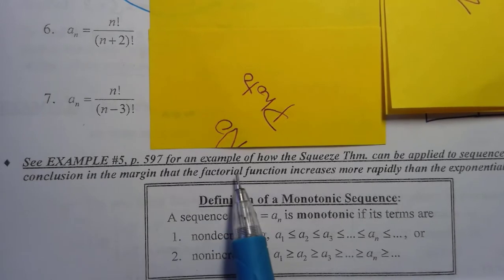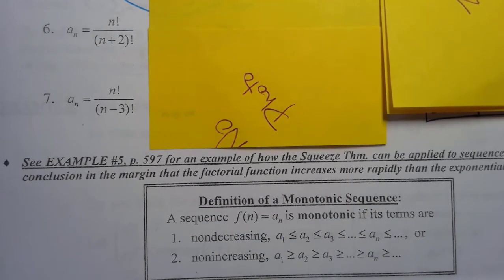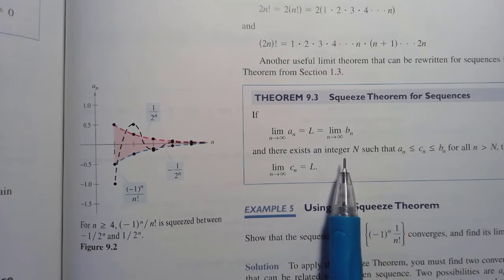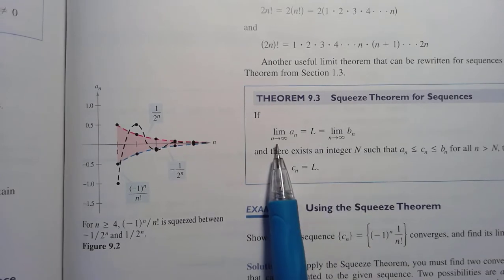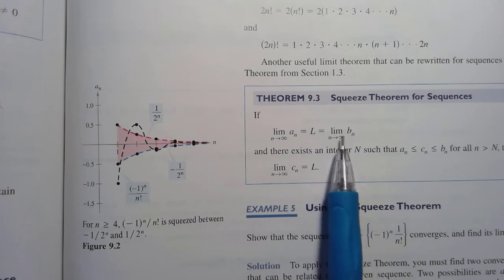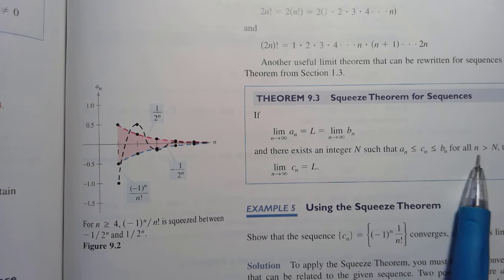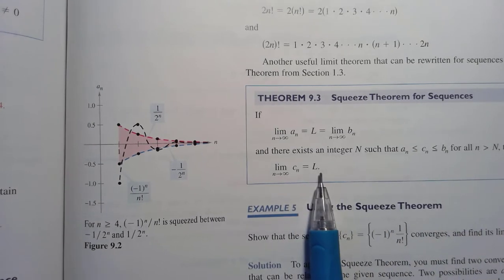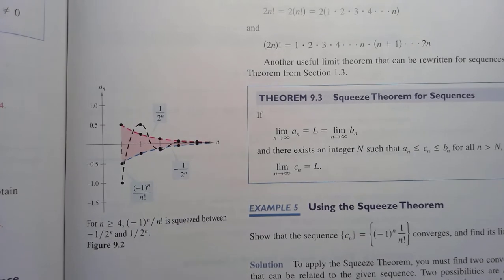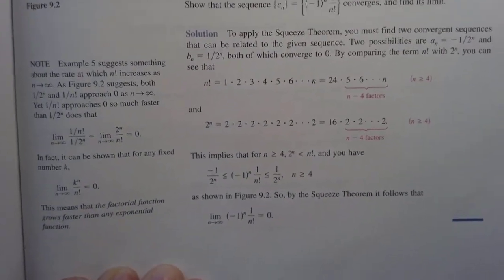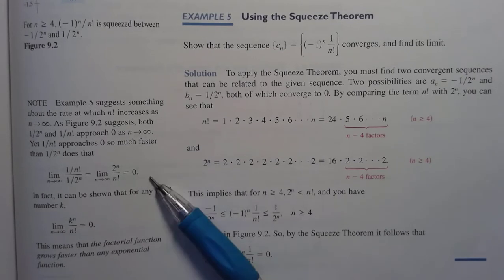Look at page 597 for an example of how the squeeze theorem can be applied to sequences. Also note the conclusion in the margin that the factorial function increases more rapidly than the exponential function. Here is the squeeze theorem for sequences: the limit as n goes to infinity of a sequence is L, which also equals the limit of another sequence. Then there exists an integer N such that C sub n for all n greater than N is also equal to L. It is very important to read through this example.